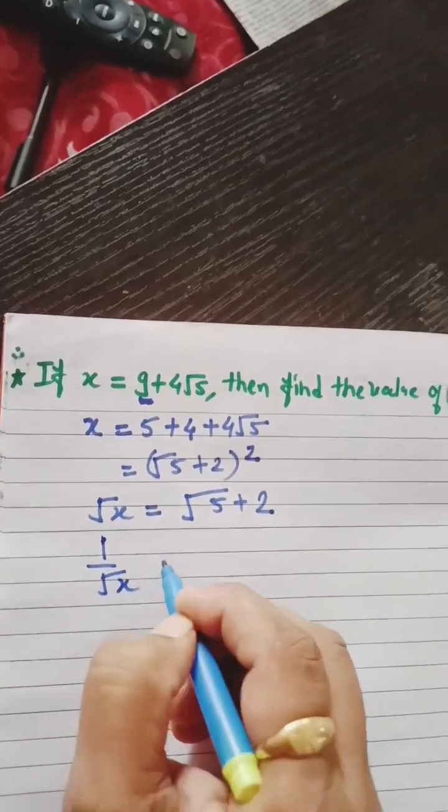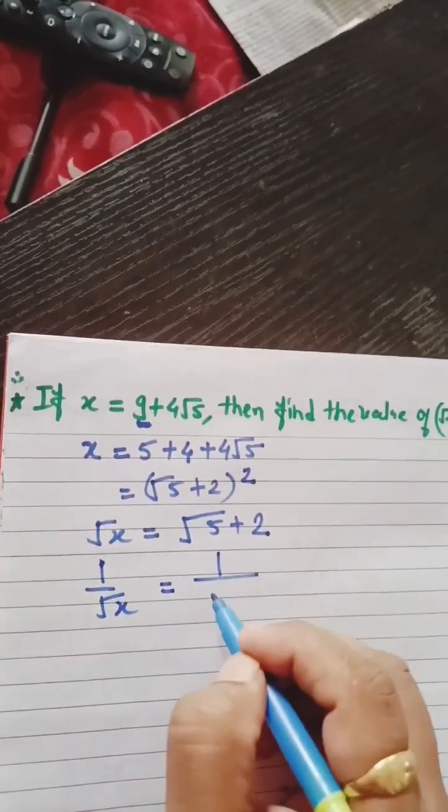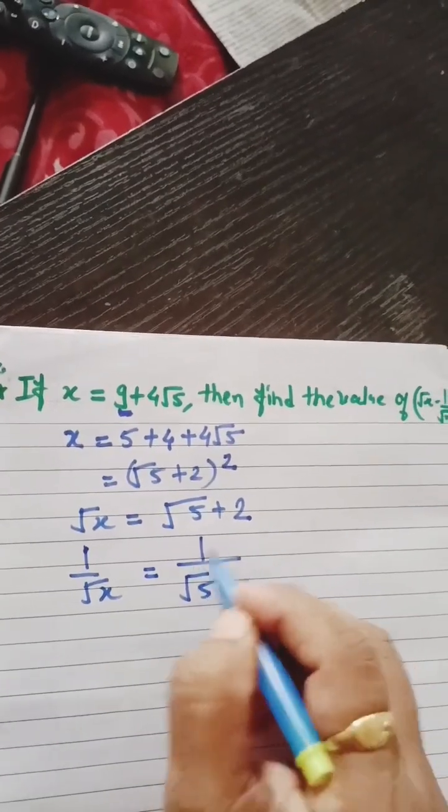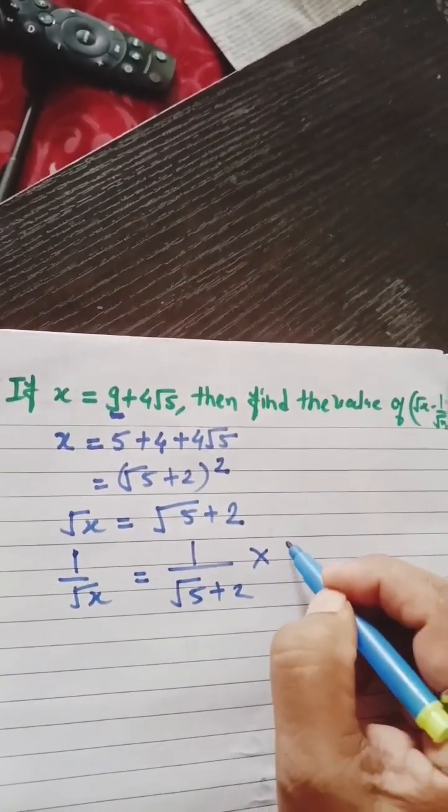Now we will find 1 by root x. The reciprocal of root x is 1 by root 5 plus 2. To solve this, we will rationalize.